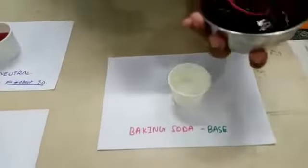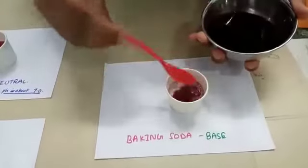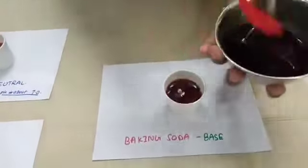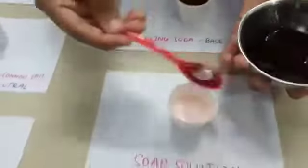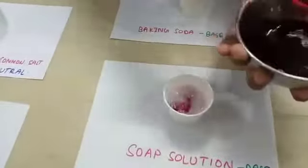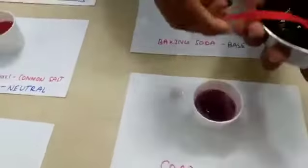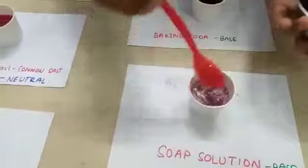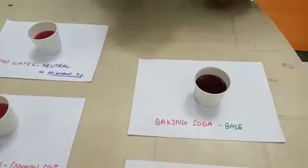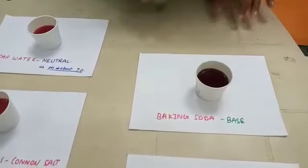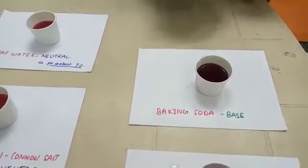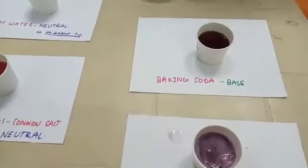When coming to baking soda, these 2 appear more darker in color — that is violet. These 2 are base in nature.